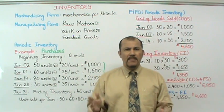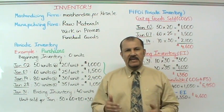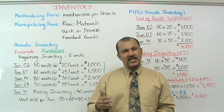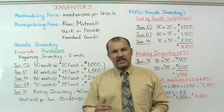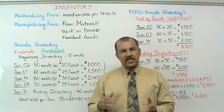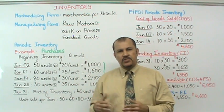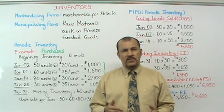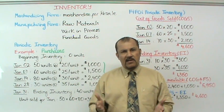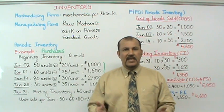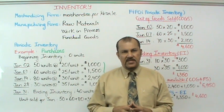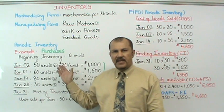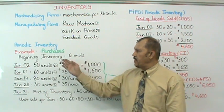There are two major inventory accounting systems: periodic inventory and perpetual inventory. In this illustration we are about to get into, we will talk about calculations using the periodic inventory method. So let's get right into the example I have outlined on the whiteboard.